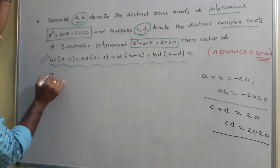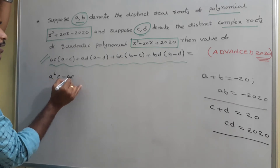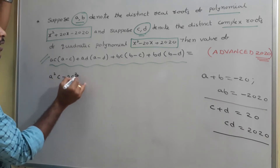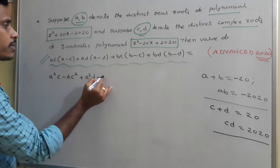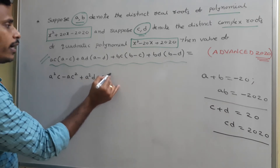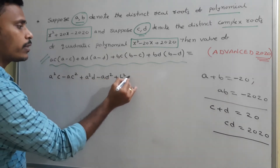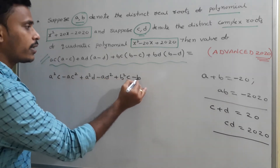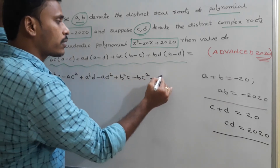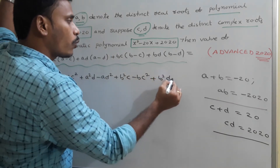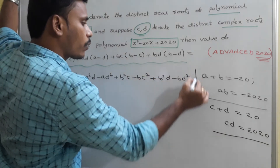When you multiply everything out: a²c − ac² + a²d − ad² + b²c − bc² + b²d − bd².